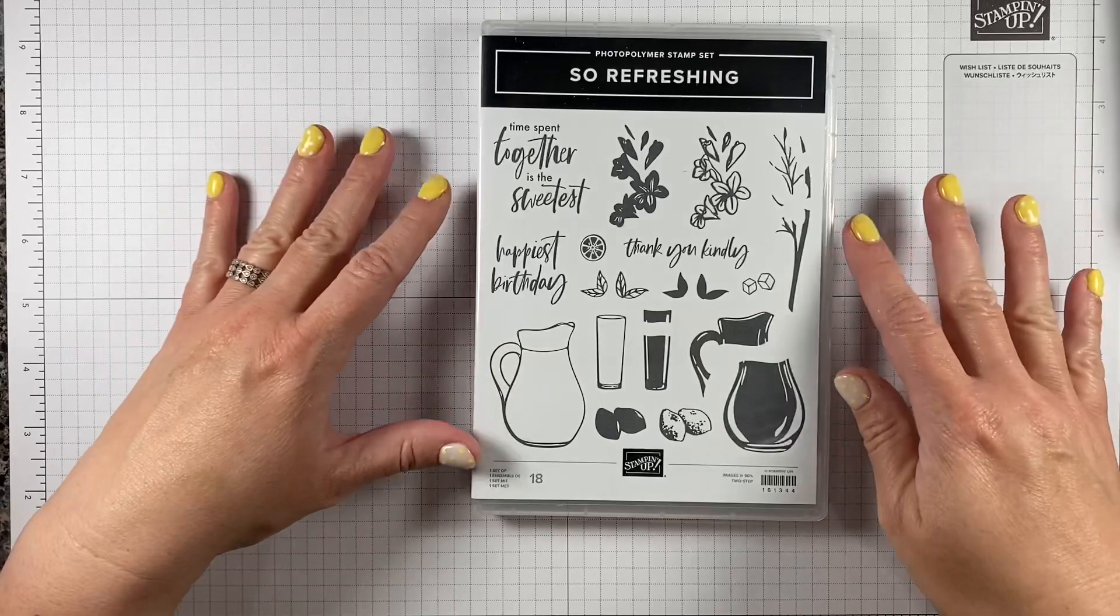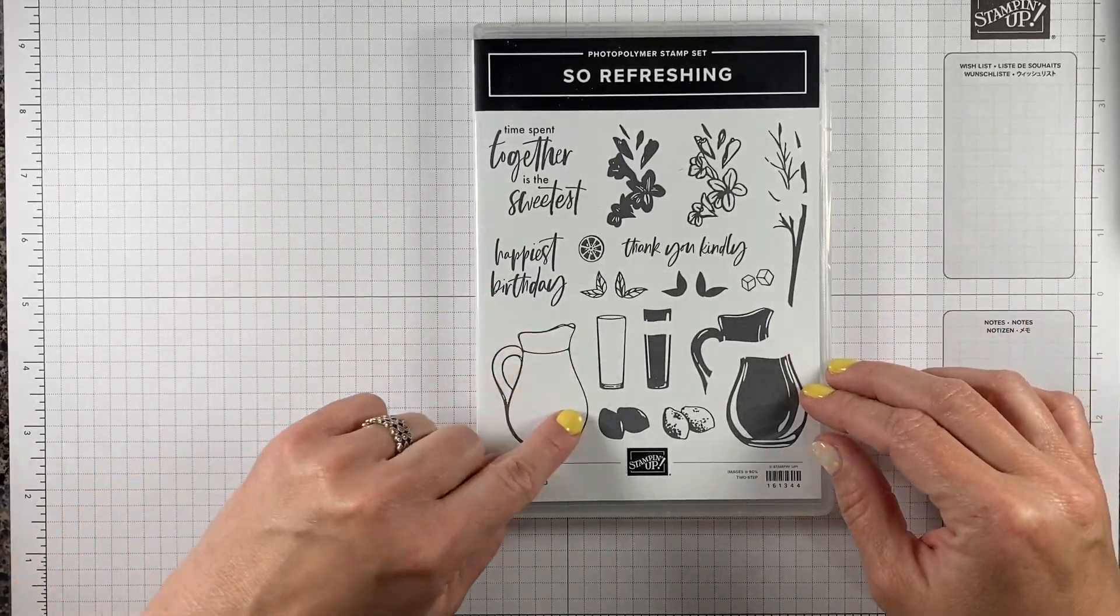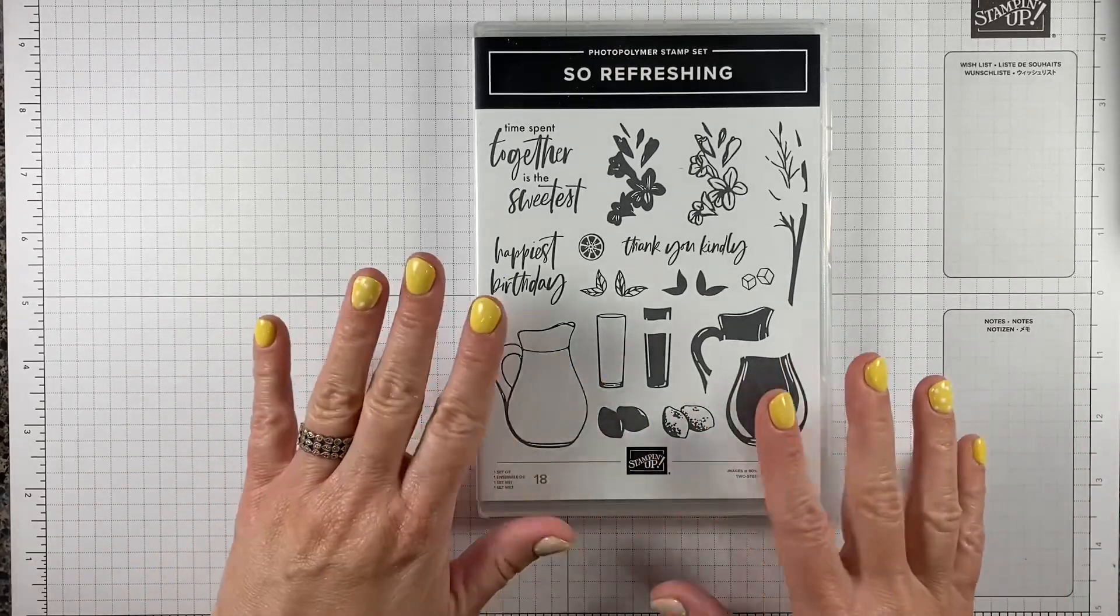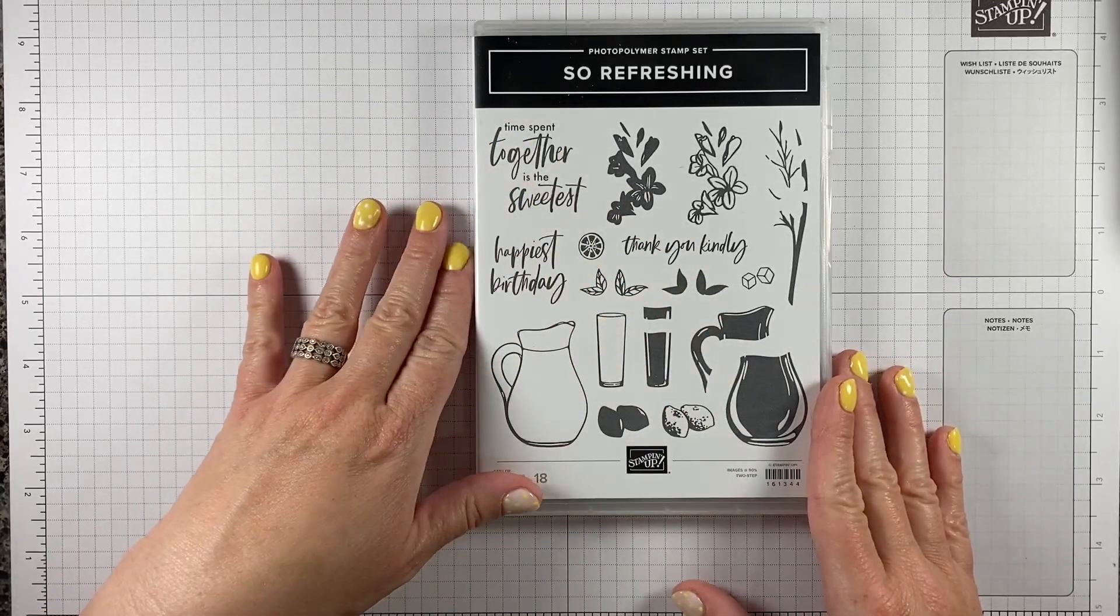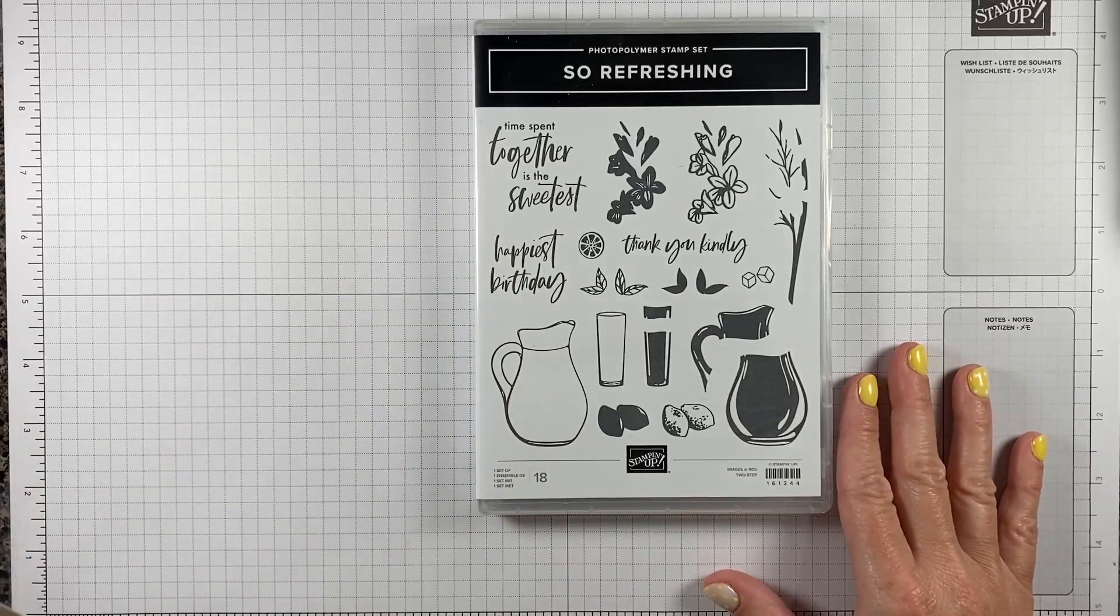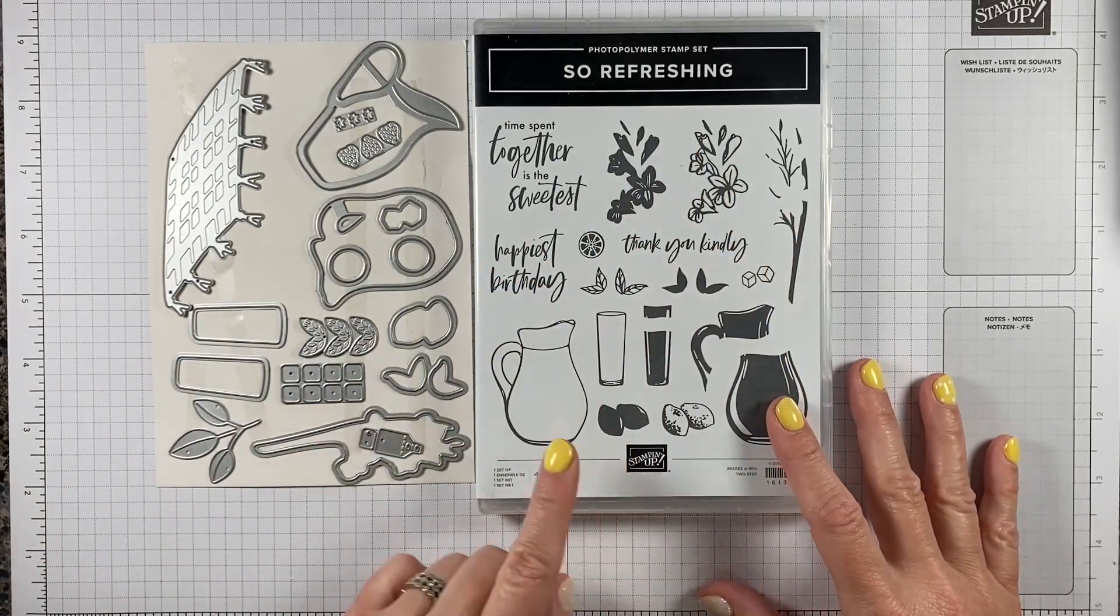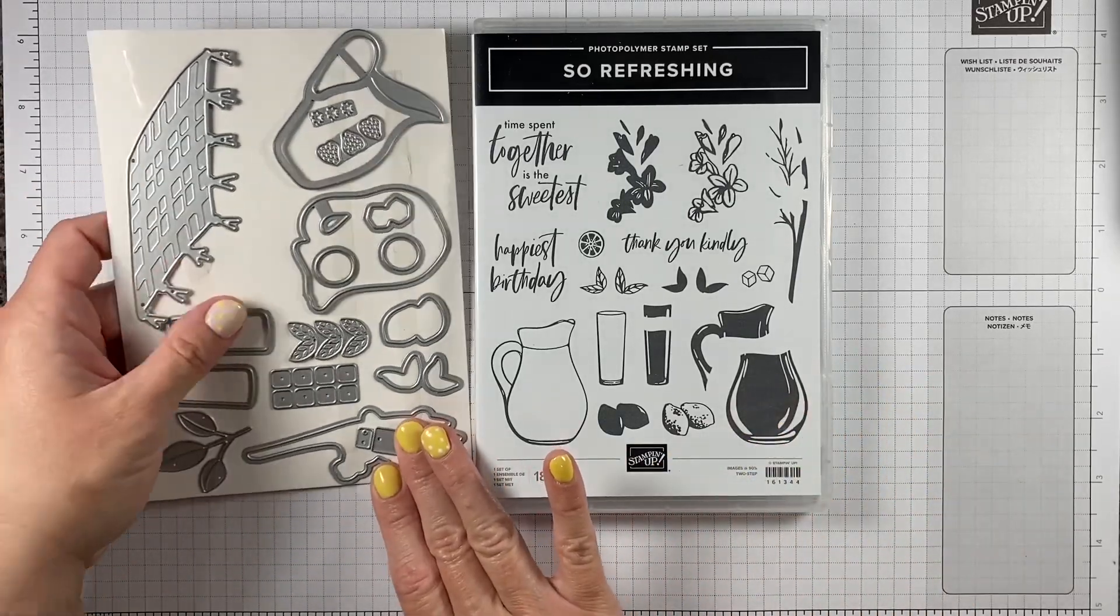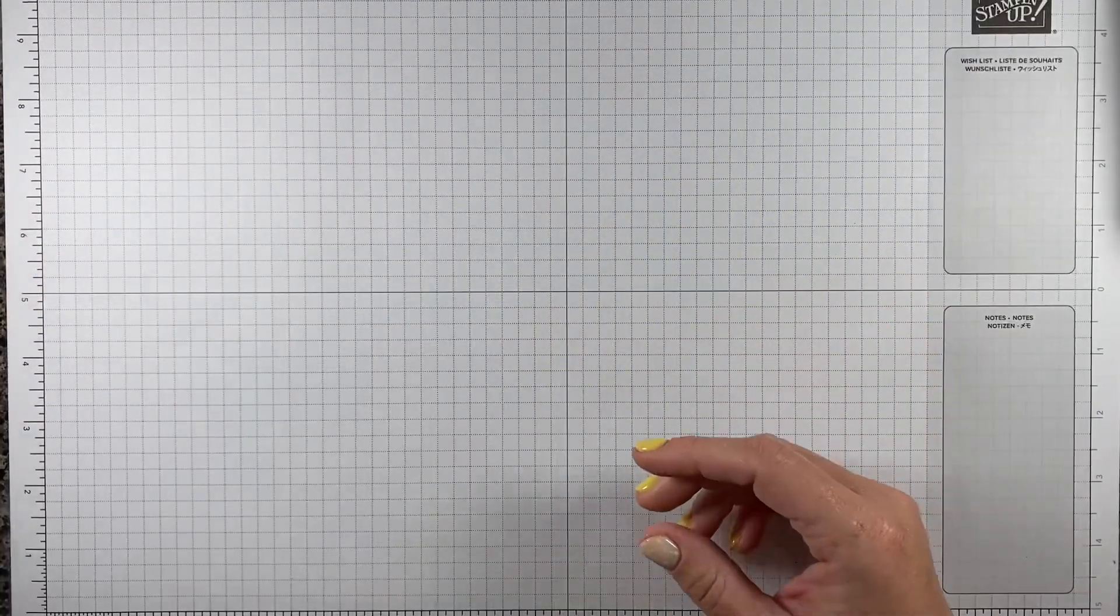The stamp set we've been assigned this week is So Refreshing. This is a two-step stamp set with outline images and filled-in images that you layer together. We've got some great pieces here for greetings and different scenes. There's also a coordinating set of dies, including a really cute little picnic rug. Each of us are going to create our best project for you.